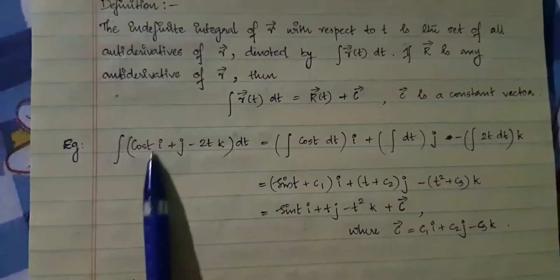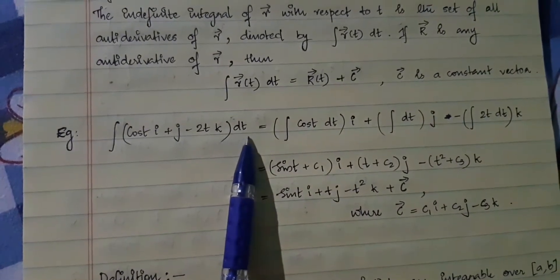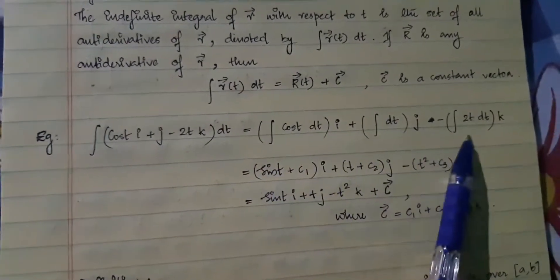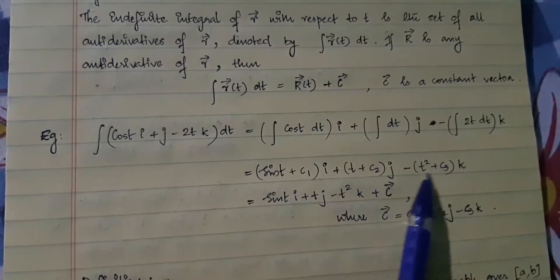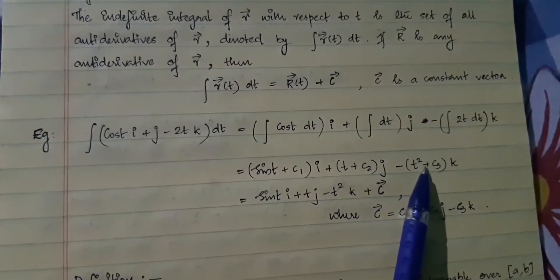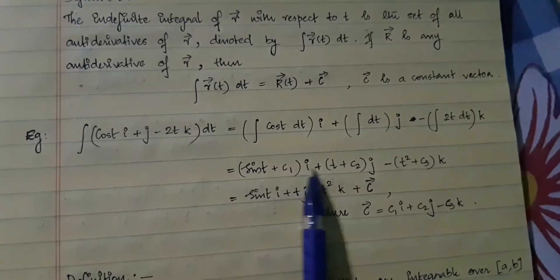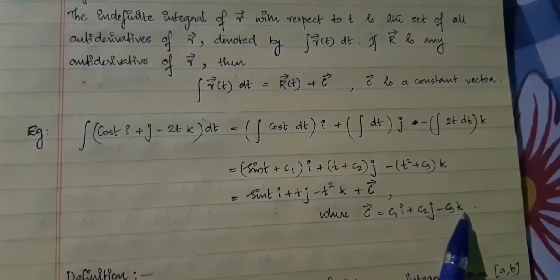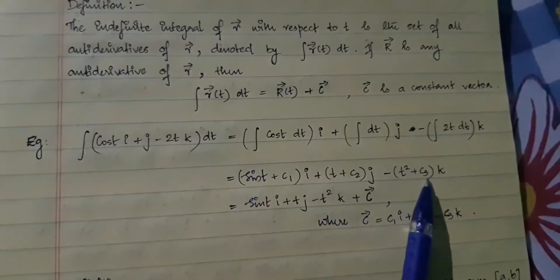So here is an example. If the integral of (cos(t)i + j − 2tk) dt is to be found, all we have to do is take the individual components and integrate each one and give it as a sum. Since this is an indefinite integral, in each case we will have an integration constant. We will have three different integration constants, each with their direction vector. Taking c₁i + c₂j + c₃k as a single constant gives a constant vector, not a scalar constant.